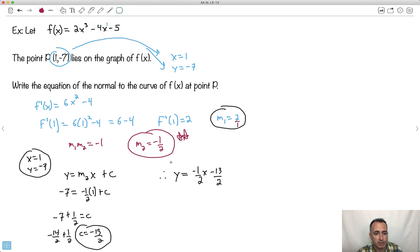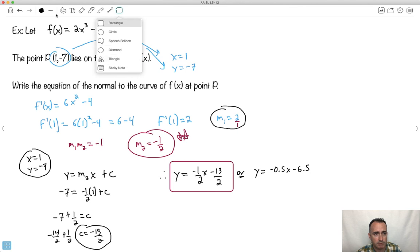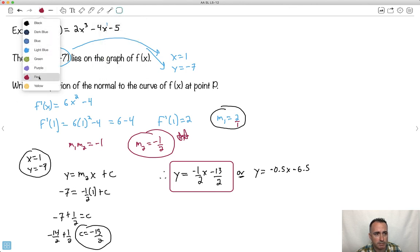Now there's a couple other ways you could write this. You could say, I mean, you could do it in decimals, I guess. You could say y equals, we can say this is minus 0.5 because that's what 1/2 is, times x. And what's 13 over 2? That's going to be 6.5. Yeah, 6.5. So this would also be correct. So just so you know, this is also a correct answer. So they're both correct.